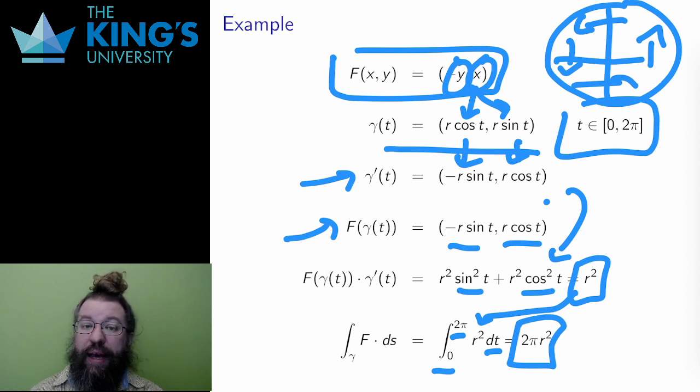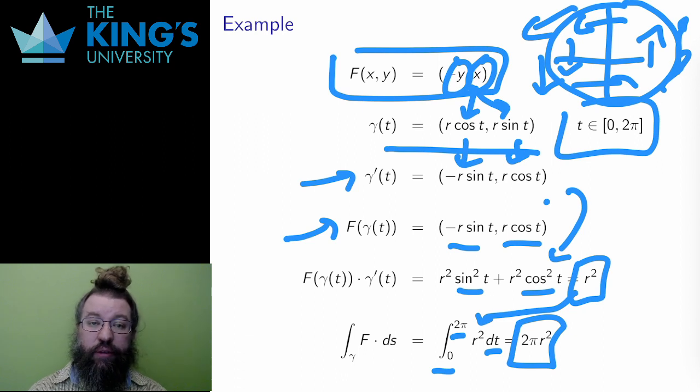This is a positive number, and it is larger with the radius. This reflects that the path γ lines up with the counterclockwise circular direction of the field. A path that goes along with the vectors of the field has a positive line integral. And the larger the radius, the longer the path, and the more substantial the effect.